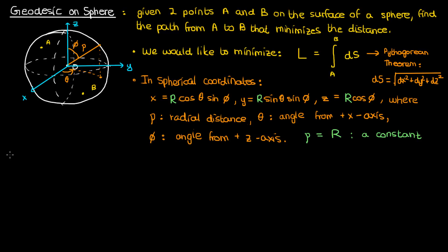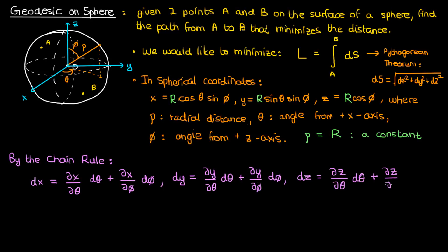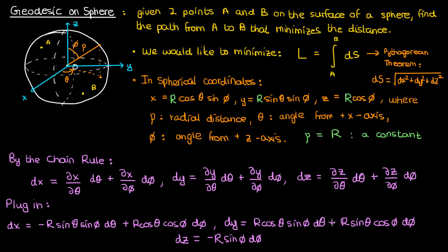In order to do this conversion we need to use the chain rule. The differential d rho is just zero since rho is a constant. Once we use the formulas for x, y, and z and plug in these partial derivatives, here's what we'll end up with.